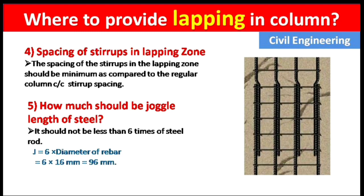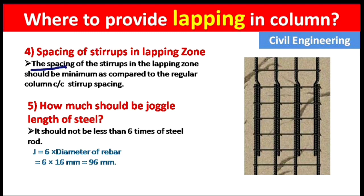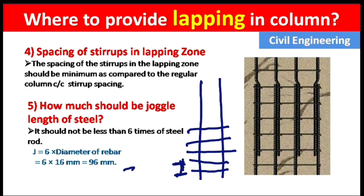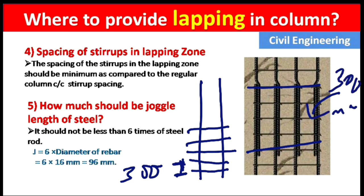The spacing of stirrups in the lapping zone — stirrups are the thin horizontal steel rods that bind all the main bars. The spacing of stirrups in the lapping zone should be less than the regular column stirrup spacing. For example, if normal spacing is 300 mm, at the lapping zone we should reduce it to 250 mm or 200 mm.